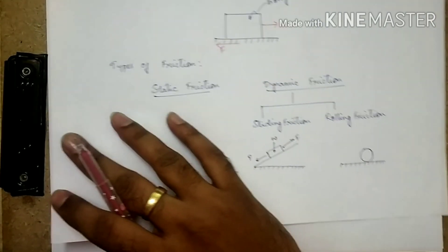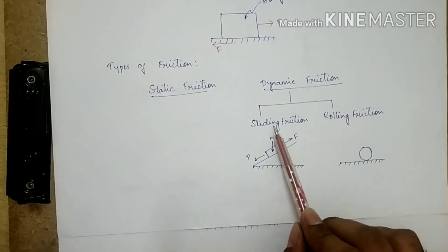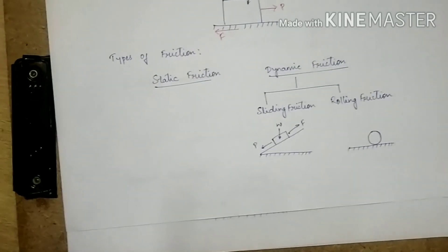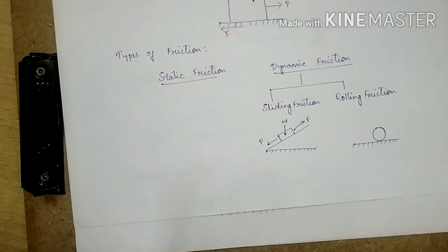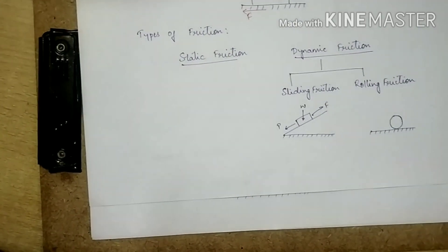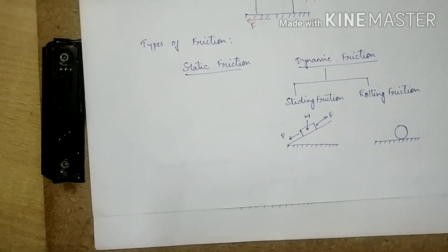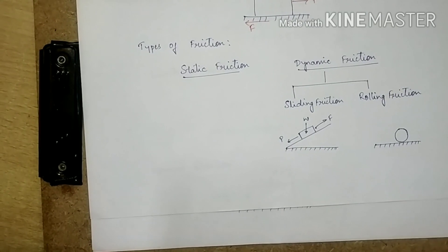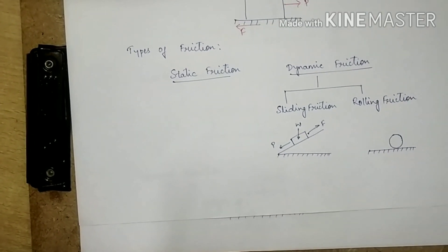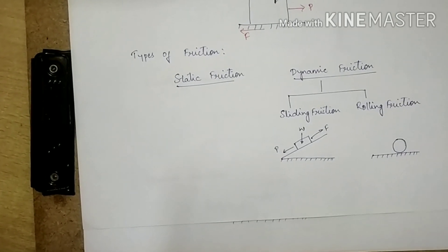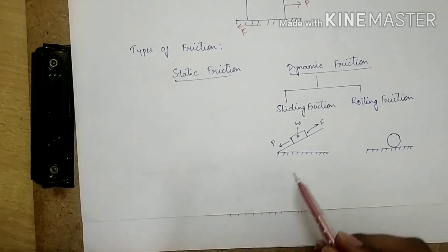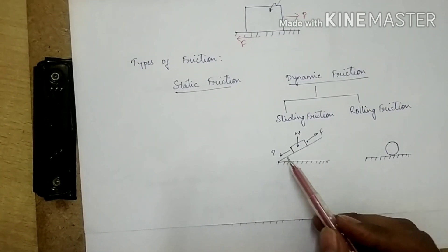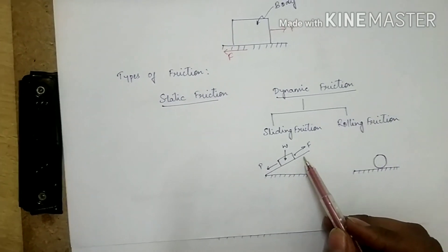Now let us consider dynamic friction, which can be classified into two types: sliding friction and rolling friction. Sliding friction acts on bodies which slide over each other. For example, the friction between a piston and cylinder, where the piston slides upon the cylinder — the motion is sliding and there is surface contact between piston and cylinder. Sliding friction is a resisting force which opposes the sliding motion of the body over the surface, acting in the opposite direction to motion.